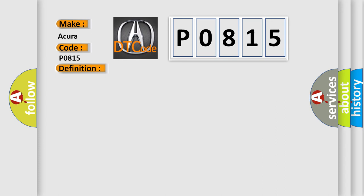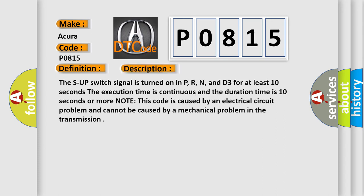And now this is a short description of this DTC code. The upshift switch signal is turned on in P, R, N, and D3 for at least 10 seconds. The execution time is continuous and the duration time is 10 seconds or more. Note this code is caused by an electrical circuit problem and cannot be caused by a mechanical problem in the transmission.